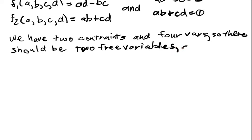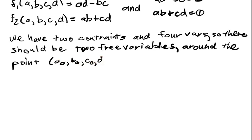Around the point (a0, b0, c0, d0) = (1, 0, 0, 1). If we identify a, b, c, d with a 2×2 matrix, this is just the identity matrix — so it's a kind of interesting problem in that respect.